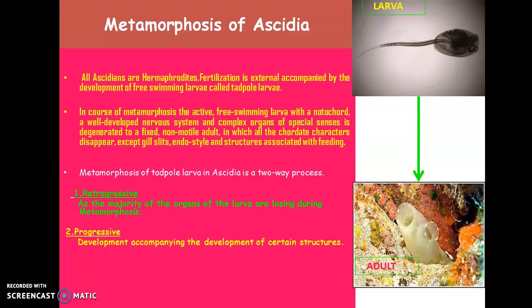We know that most of the Ascidians are hermaphrodites, which means both male as well as the female reproductive structures will be seen within the same individual. As they are exclusively marine, the fertilization is external and the development is indirect. We know that when the development is indirect, it involves a free-swimming larva that is called a tadpole larva. So this is the larva of Ascidians.